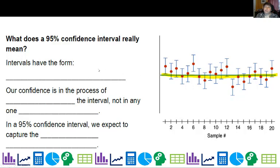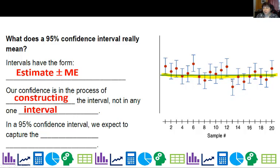So what does a 95% confidence interval really mean? First of all, intervals have the form your estimate, also called the mean in this case, your point estimate, plus or minus your margin of error. That's the form. Our confidence is in the process of constructing the interval, not in any one interval.